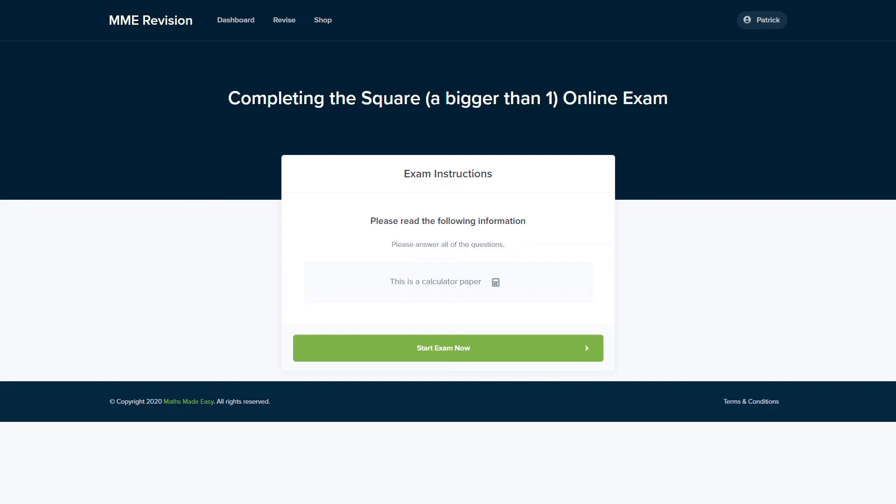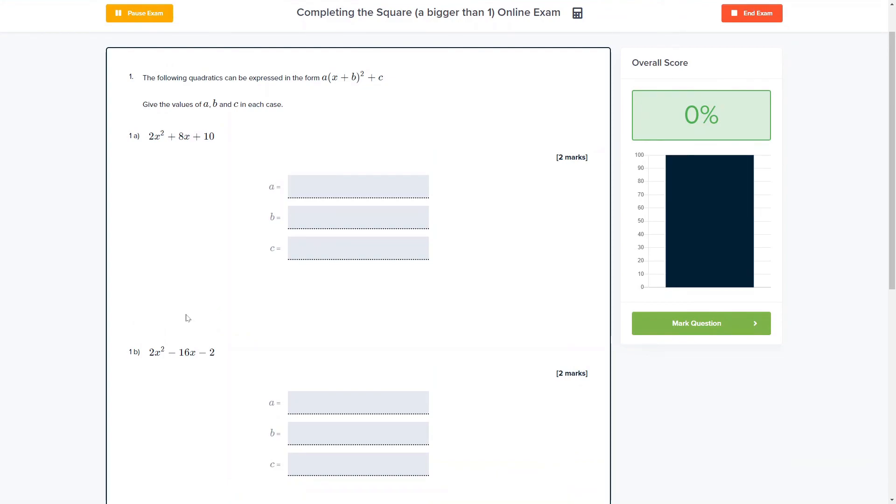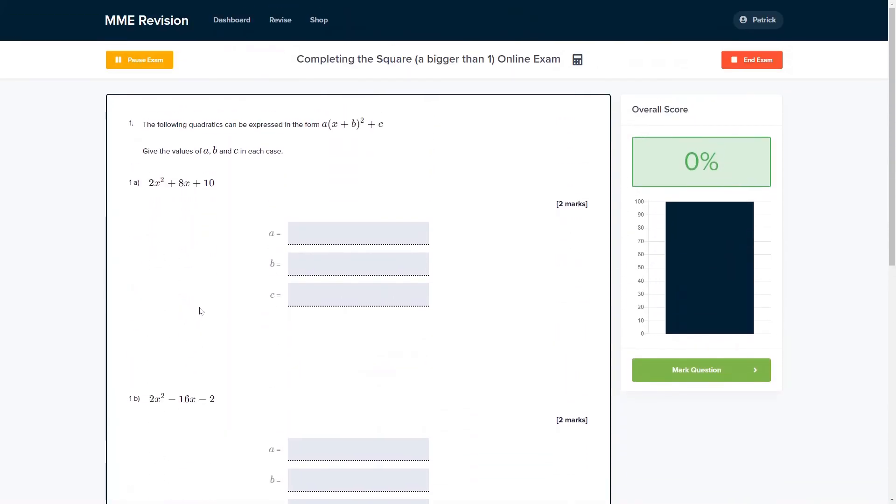Completing the square is one of the hardest topics in GCSE maths, so it's important that you get some practice in before the actual exam. You can do so with our online exam, available through our revision platform. If you take the test you'll find loads of different questions to have a go at, all of which you'll receive instant feedback on. So it's a good way of keeping track of your progress and finding out where you're going wrong so you can improve for your actual exam. If you're interested, you can click the link below and it will take you straight over there.